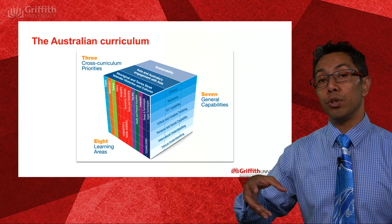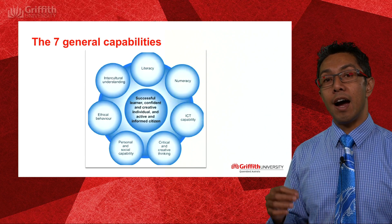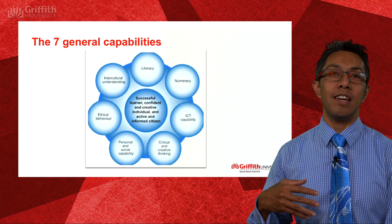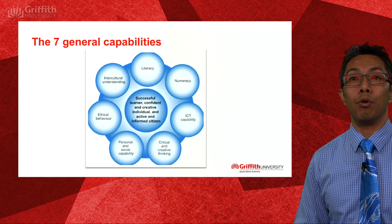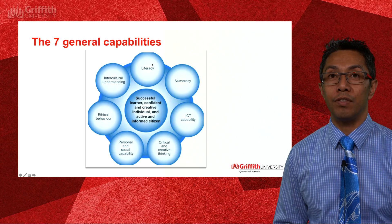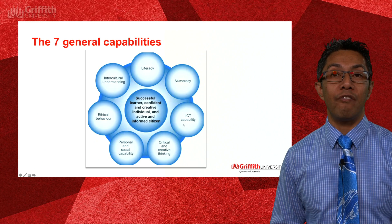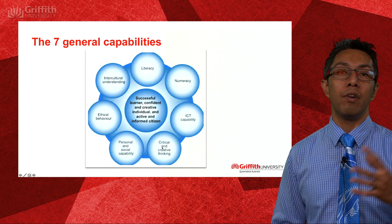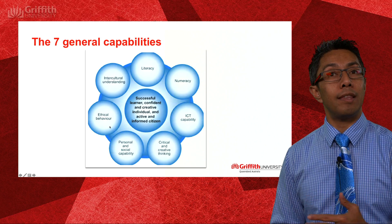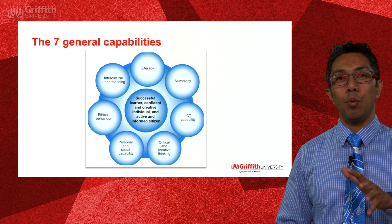The other element that also runs across the eight learning areas is the seven general capabilities. These essentially are the skills that the curriculum writers have deemed necessary for learners to be confident, creative individuals and active and informed citizens. An Australian citizen participating in democratic processes should be able to read, do maths, use modern technology, apply higher order thinking, know themselves and others, behave ethically, and understand other cultures.